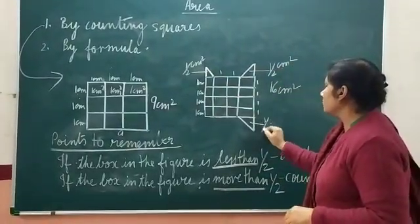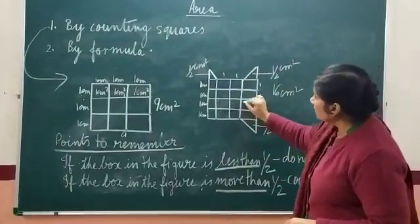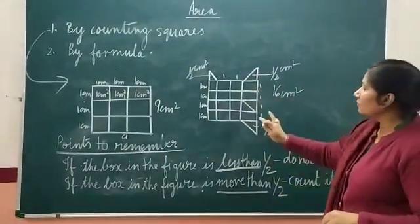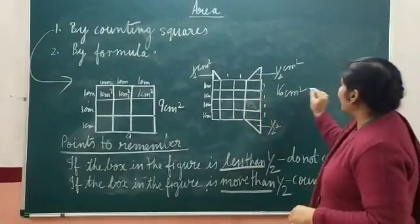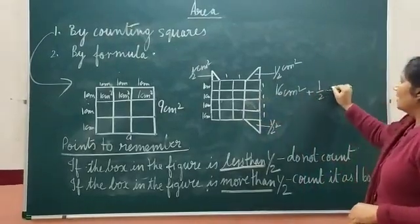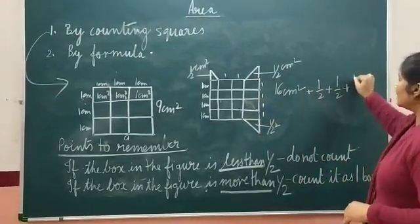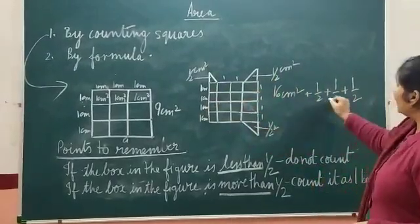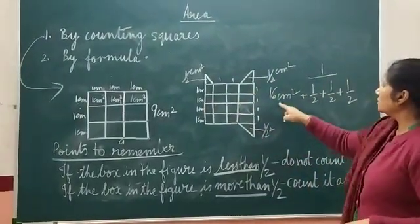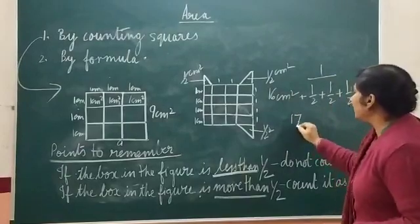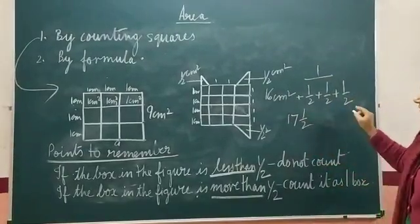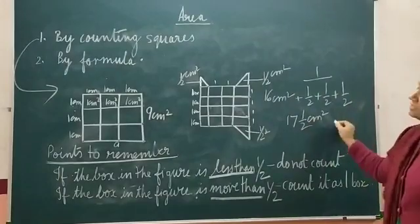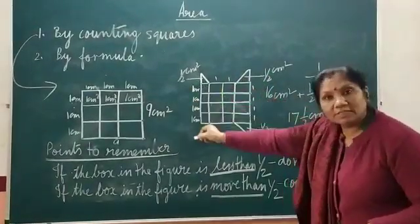There are half boxes — the boxes are divided in half. So plus half, plus half, plus half, plus half — that is one. So 16 plus 1 equals 17, and there is still one half left. So the area of this given figure is 17.5 centimeter square.